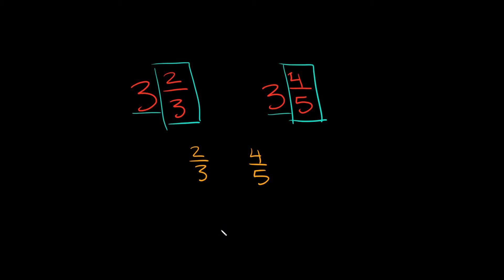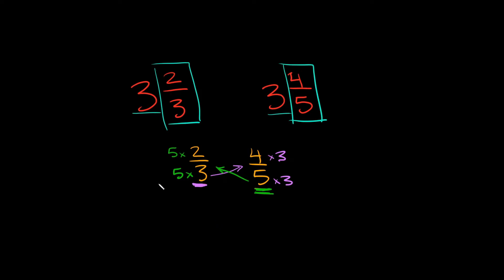Which fraction is bigger? We can't compare these directly because they have different denominators. So to give them the same denominator, I'm going to cross-multiply. I'll multiply three with the fraction on the right — multiplying by three on the top and bottom — and multiply five with the fraction on the left — multiplying by five on the top and bottom. Simplifying: five times two is 10 over five times three which is 15, and four times three is 12 over five times three which is 15.